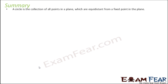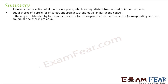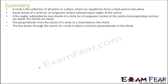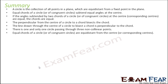Let us do a quick recap. A circle is a collection of all points in the plane equidistant from a fixed point called the center. Equal chords subtend equal angles at the center, and conversely, if angles subtended at the center are equal, the chords are equal. The perpendicular from the center bisects the chord, and conversely, the line from the center that bisects the chord is perpendicular to it. There is only one circle through three non-collinear points. Equal chords are equidistant from the center.